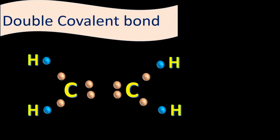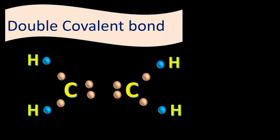In a double covalent bond, two pairs of electrons — four electrons total — are shared between two atoms. For example, in ethene (C₂H₄): carbon has four electrons in its valence shell, but it shares only two electrons with hydrogen, and the remaining two electrons are shared with the other carbon atom, forming a double covalent bond between the two carbons.